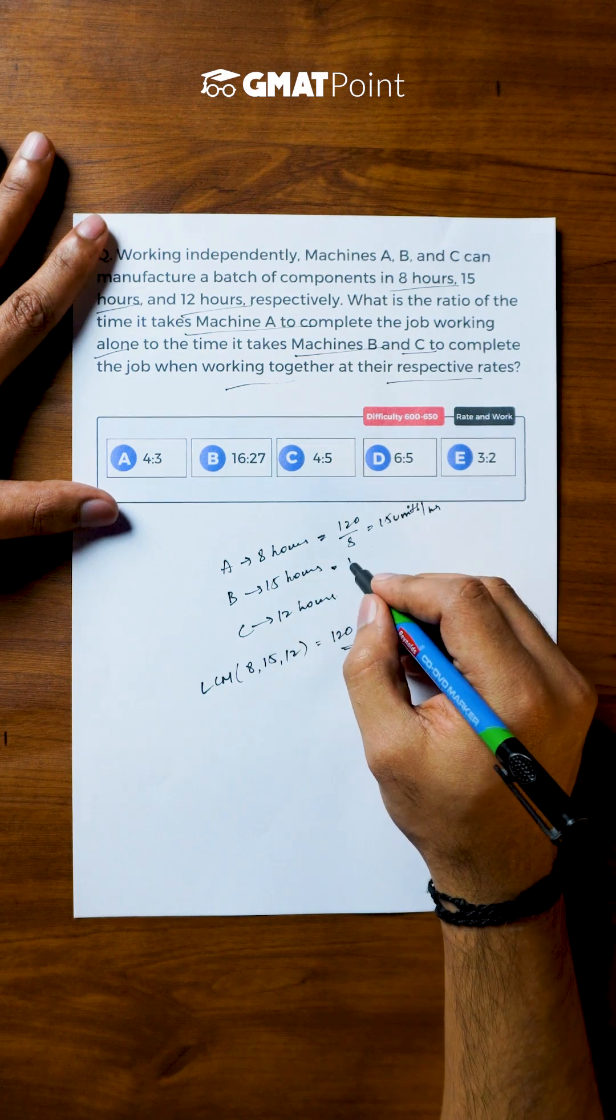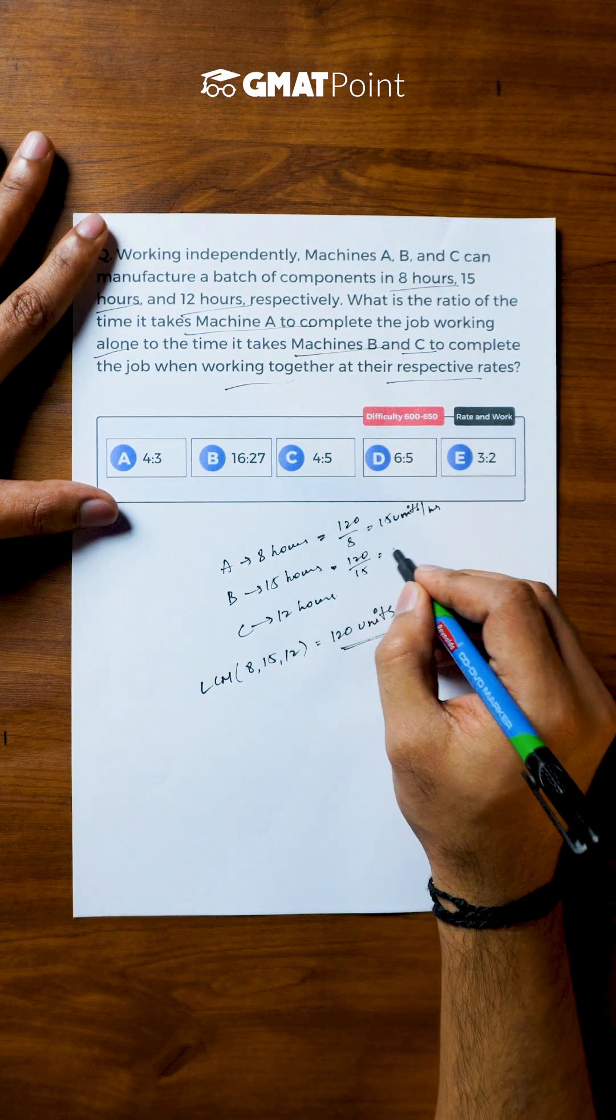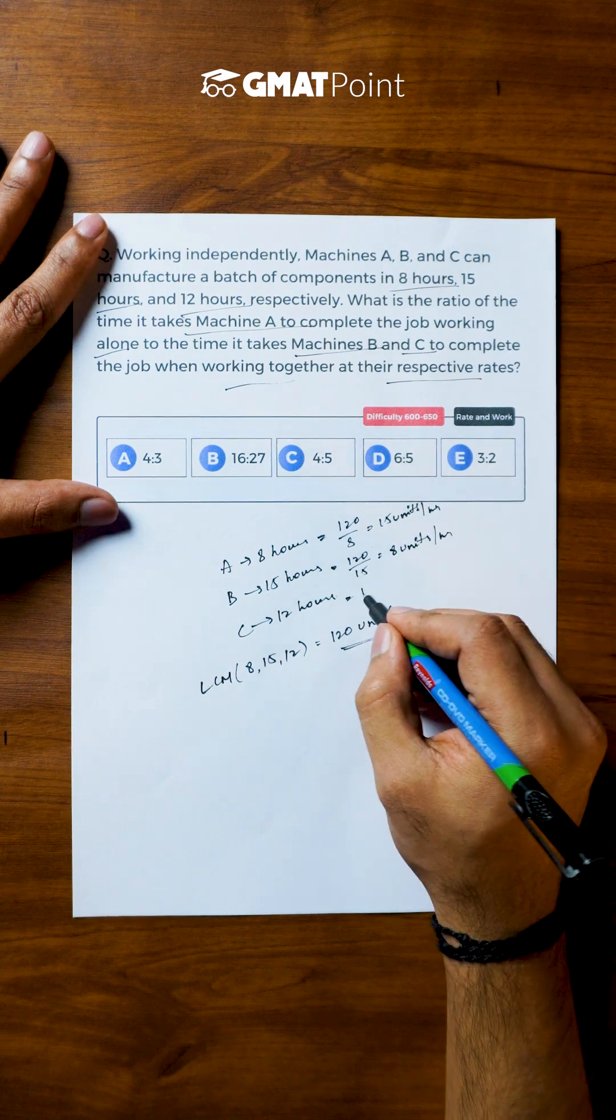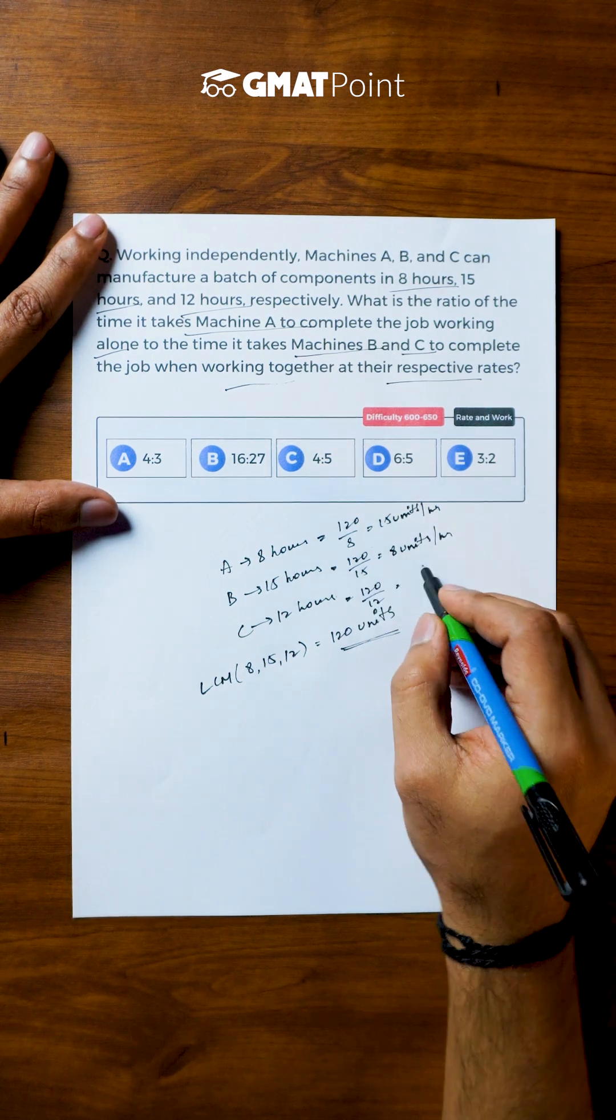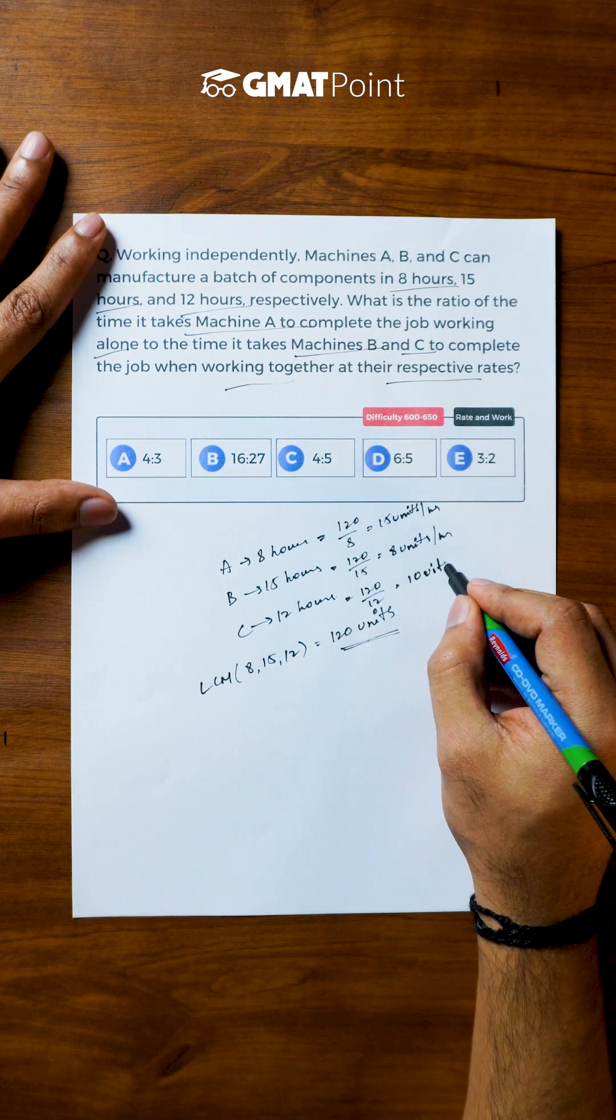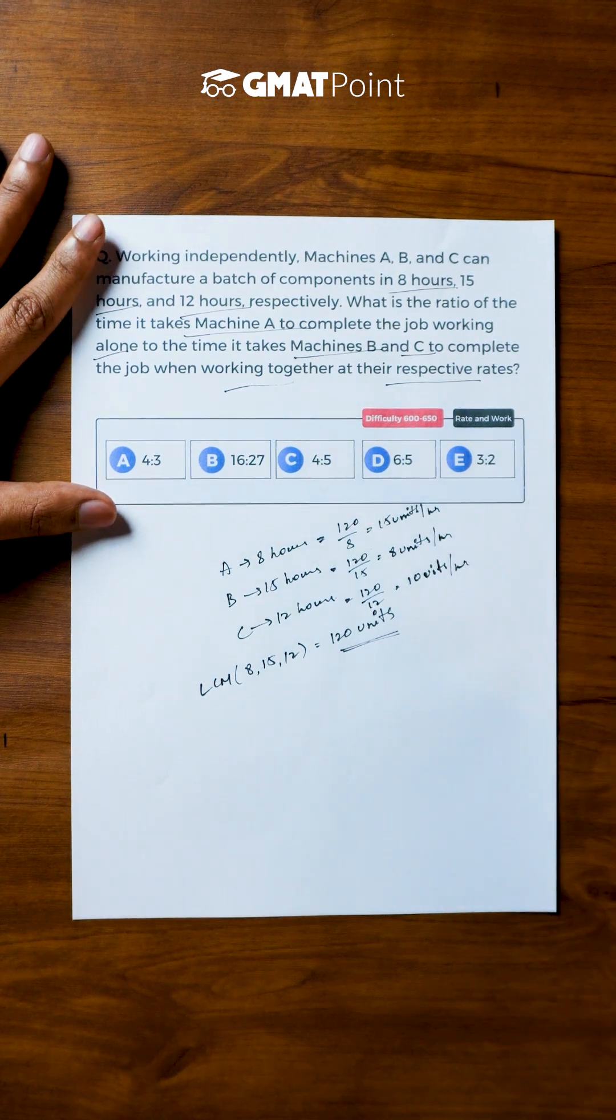Similarly in the case of B the amount of work done is 8 units per hour and in the case of C the number of units of work done per hour can be calculated as 120 by 12 which is 10 units per hour.